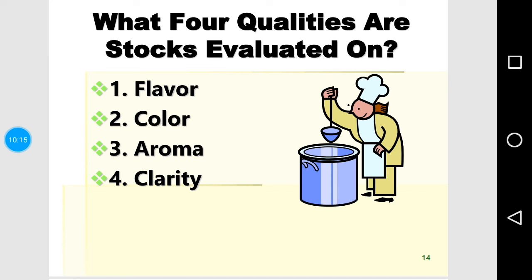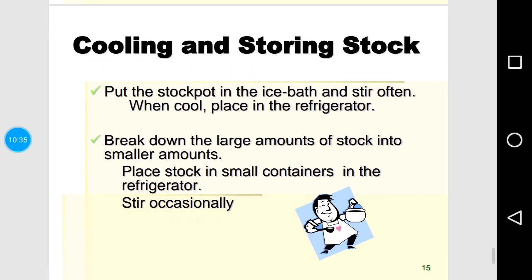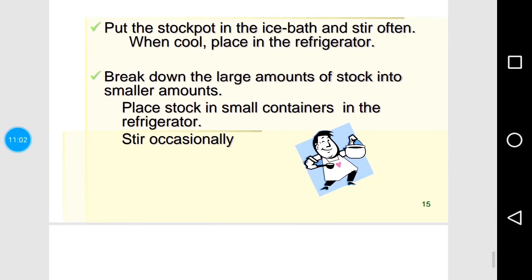It is very important to have a clear stock, not a cloudy one. Remember: never use salt while preparing a stock, and never cover the stock pot with a lid. Always use fresh ingredients. Once the stock is prepared, strain it and put it in an ice bath or water bath to cool it, then store in clean containers in the refrigerator for three to four days. Stir the stock occasionally, as sediments settle at the bottom.